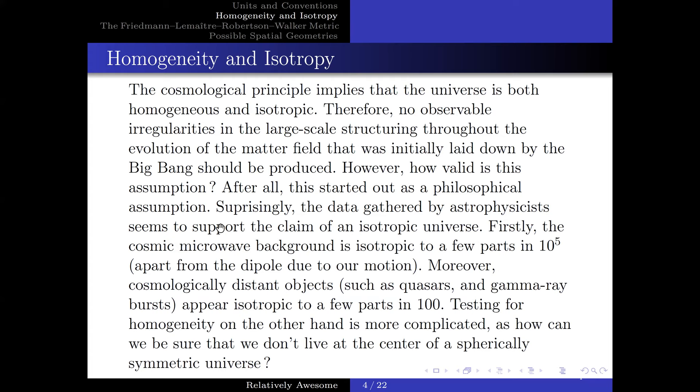Surprisingly, the data gathered by astrophysicists seem to support the claim of an isotropic universe. First, the cosmic microwave background is isotropic to a few parts in 10 to the 5, apart from the dipole due to our motion. Moreover, cosmologically distant objects such as quasars and gamma rays appear isotropic to a few parts in 100.